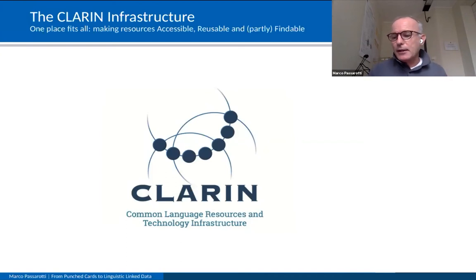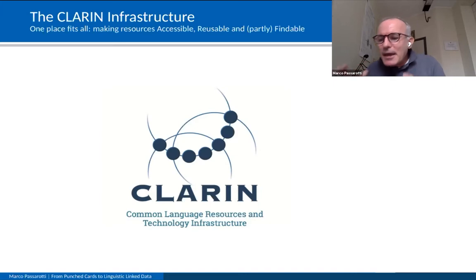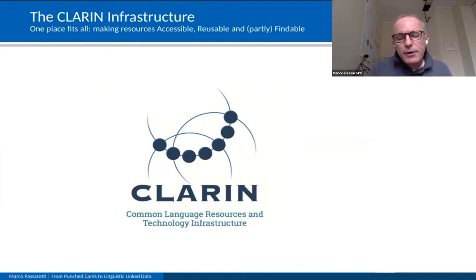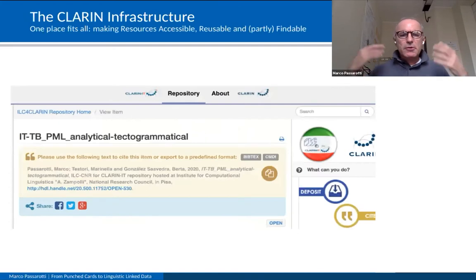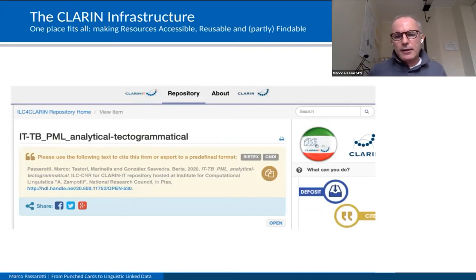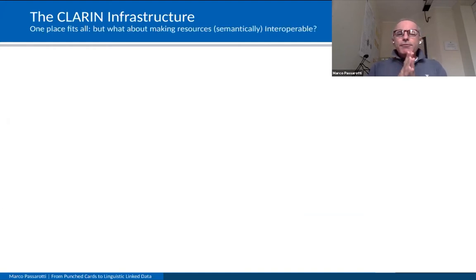In CLARIN, resources in terms of data and metadata are indeed accessible and retrievable using a standardized communication protocol; they are reusable, meaning data and metadata are released with a clear and accessible data usage license; and they are partly findable, because metadata of resources are assigned a globally unique and persistent identifier — but not yet at the level of granularity of the single token in a corpus or a single lexical entry in lexical resources. The Index Thomisticus treebank is now published in CLARIN and stored at the Istituto di Linguistica Computazionale repository in Pisa, the Italian node of CLARIN.